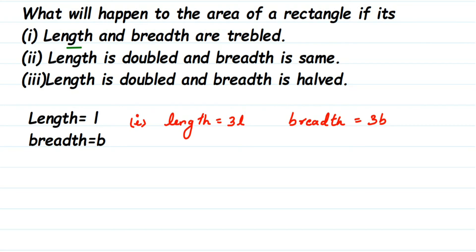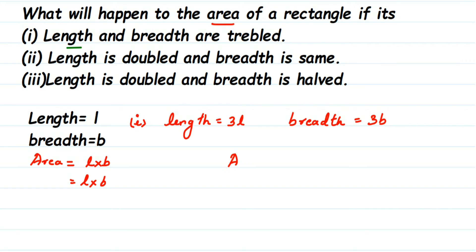Now we have to find the area of the new rectangle. We know the area of a rectangle is length into breadth, which is L into B, giving LB for the normal rectangle. Since we changed the dimensions, the new area will be 3L into 3B.